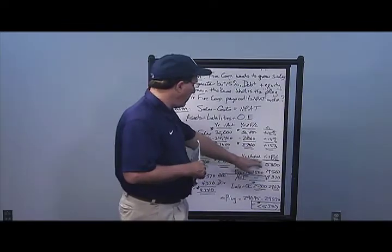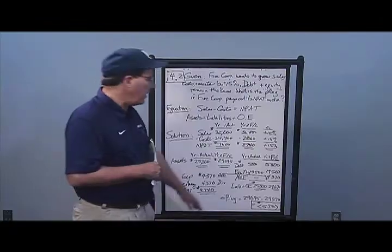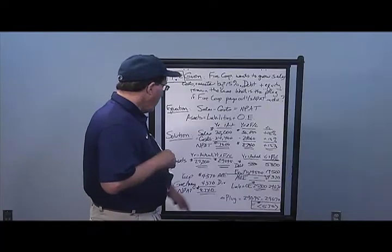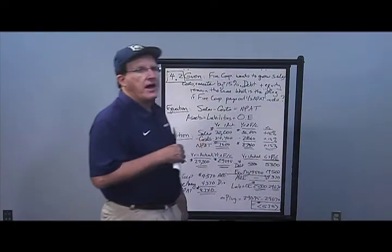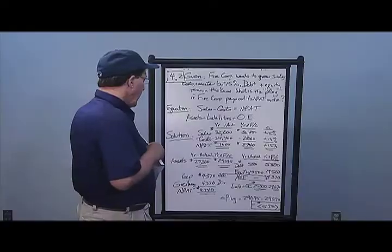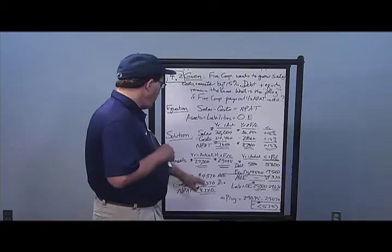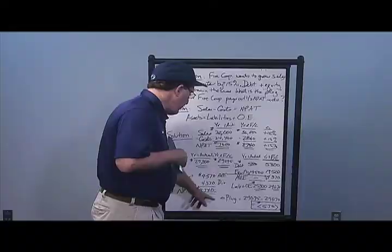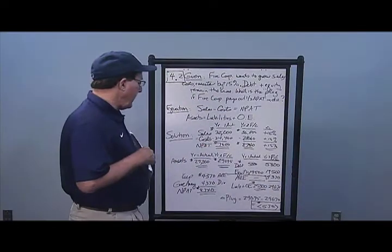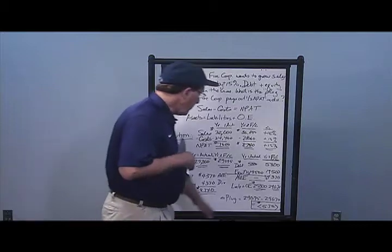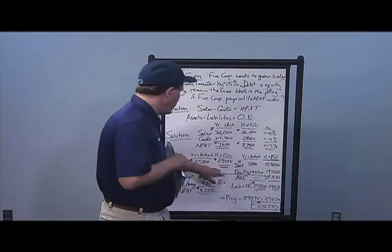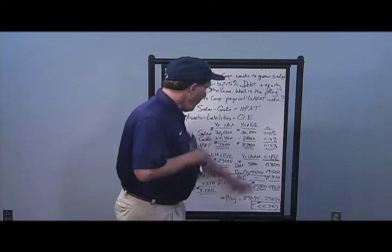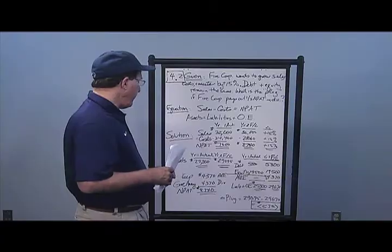In year two, I have 5,800 of debt and 19,500 of equity, same as last year. I add half of my additions to retained earnings — 4,370 that I'm keeping — giving me 29,670 on the right side. That's out of balance with my assets of 29,095. To calculate the plug: I take assets of 29,095 subtract the new liabilities and equity figure of 29,670.